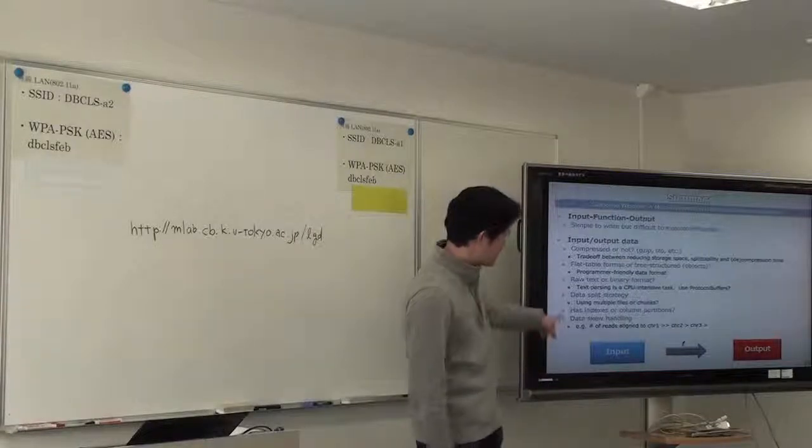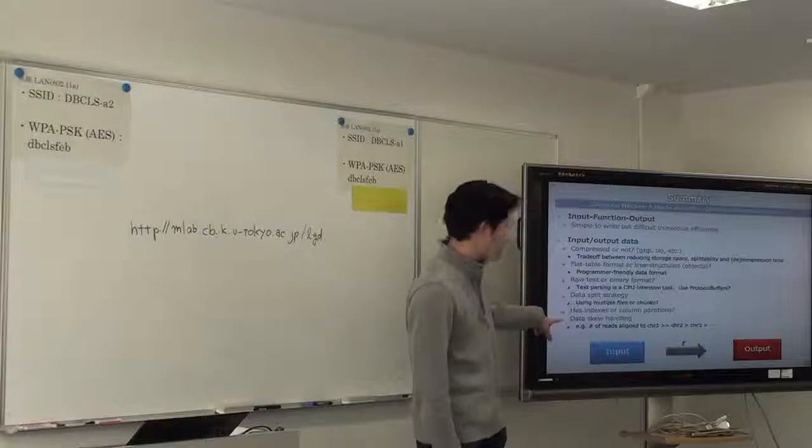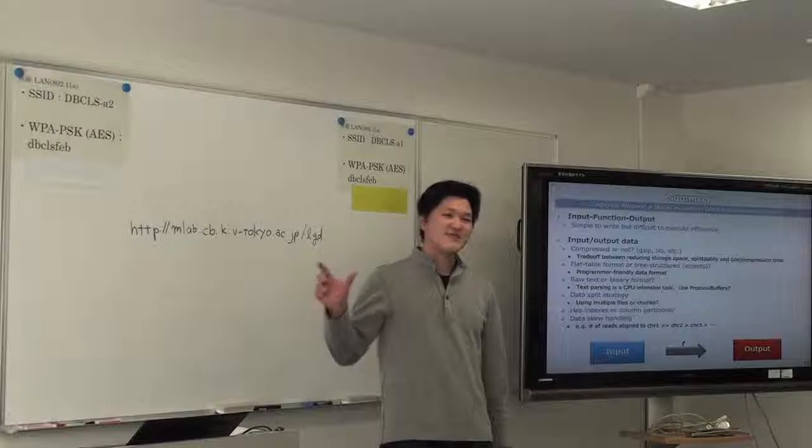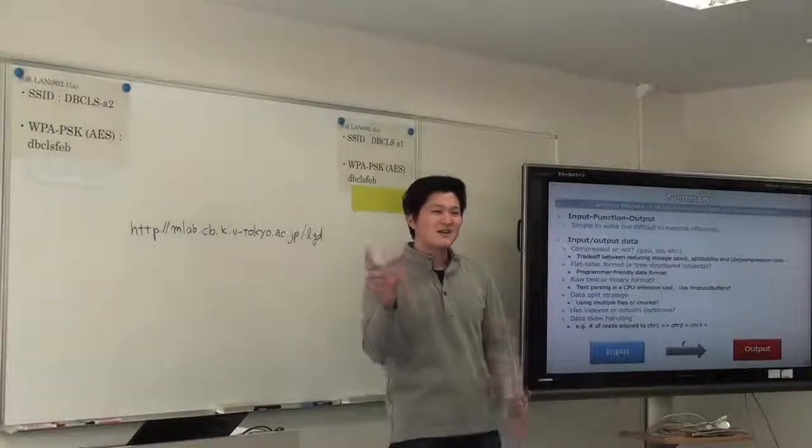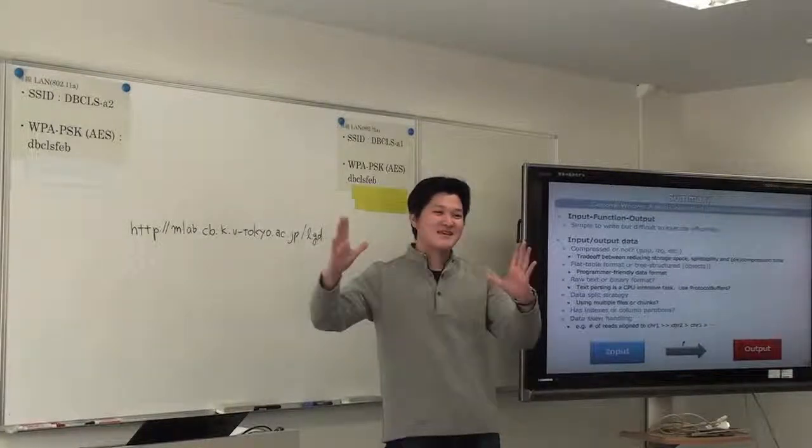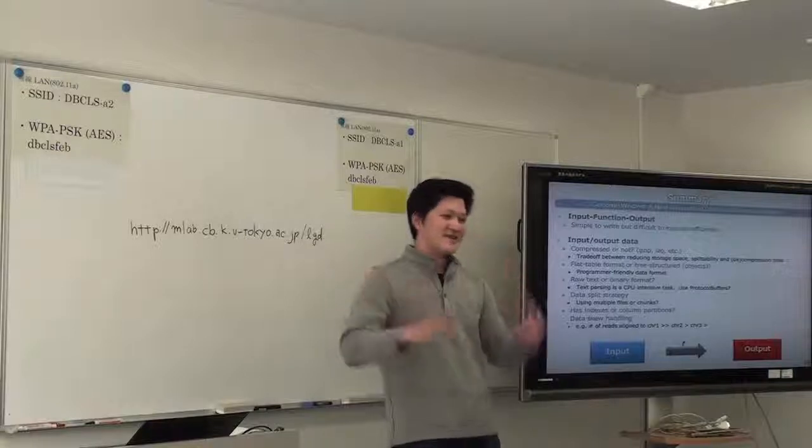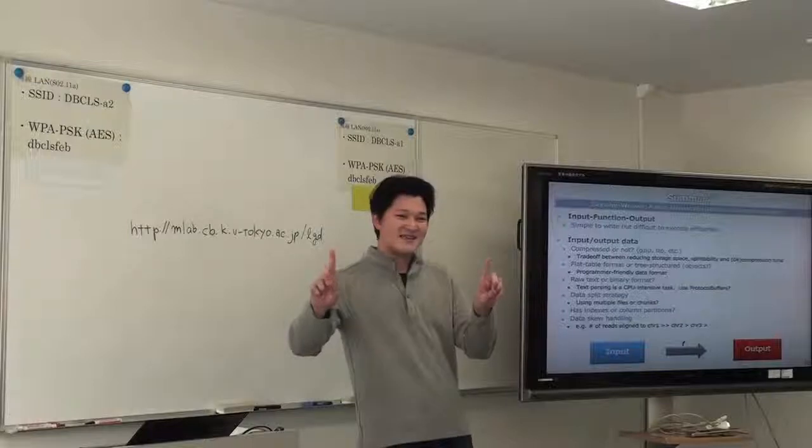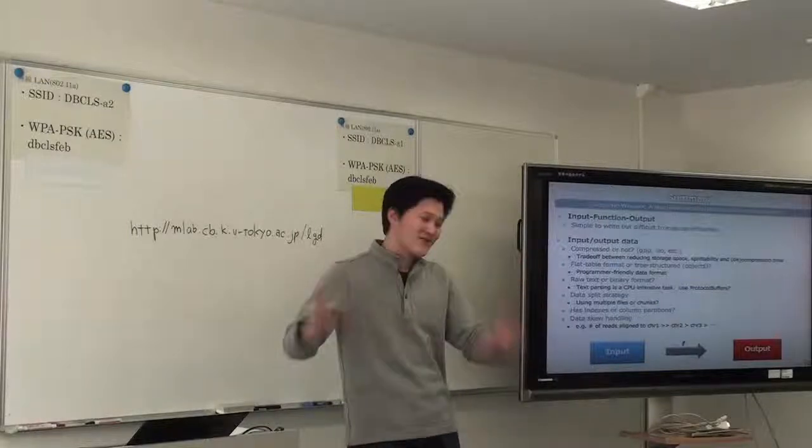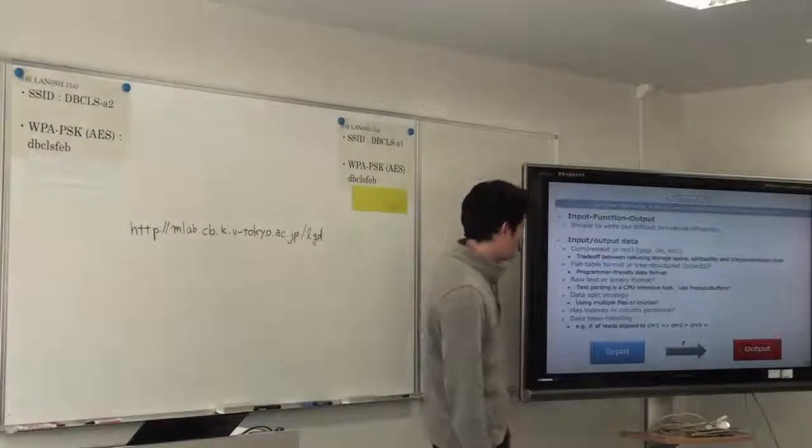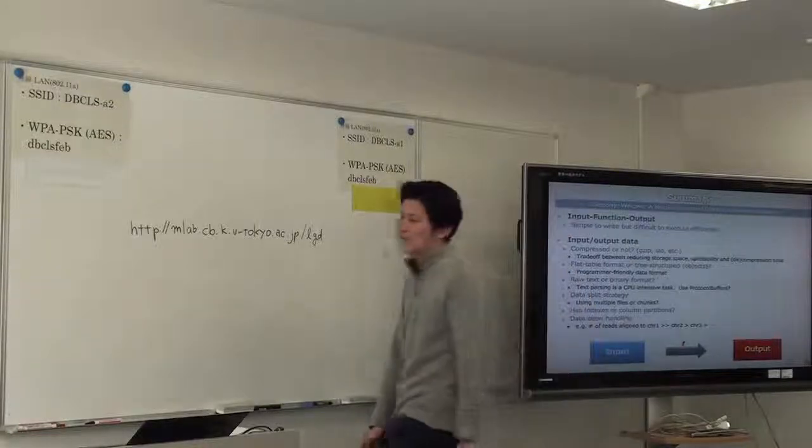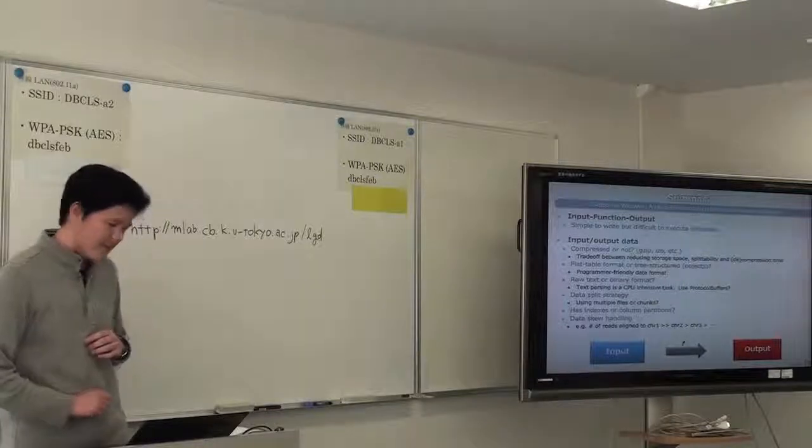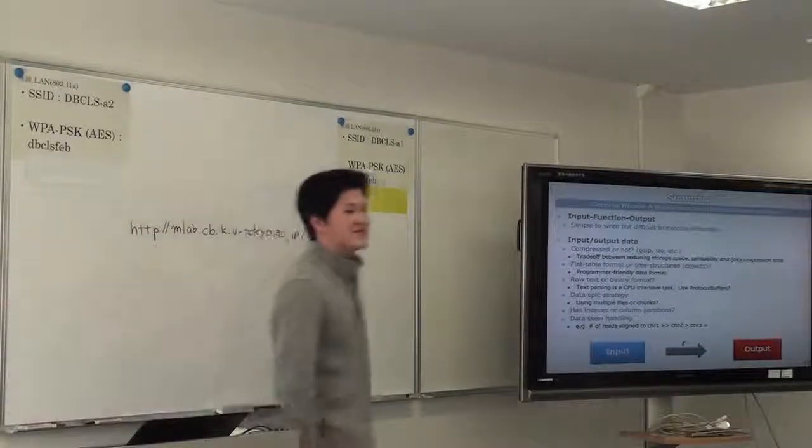And also, there are other problems. I haven't explained a lot about this, but data skew handling. So in genome sciences, you frequently observe that chromosome 1 is the longest length. So the alignment problem for chromosome 1 takes the longest time. So there's a skew from chromosome 1 to chromosome X. Okay, so this is it for my presentation. Thank you.